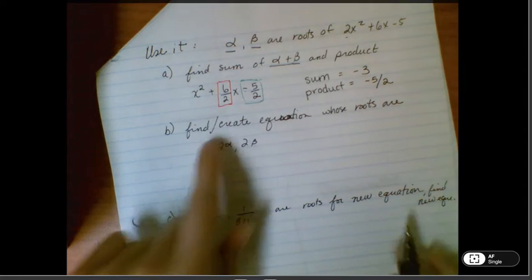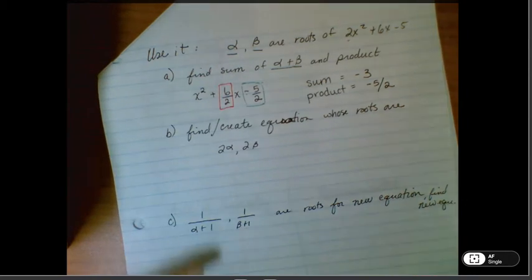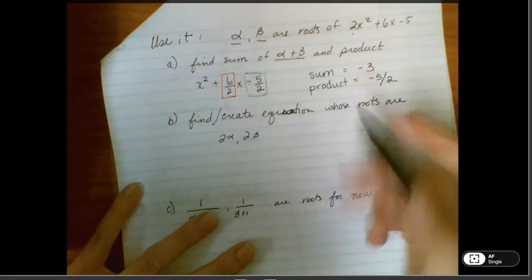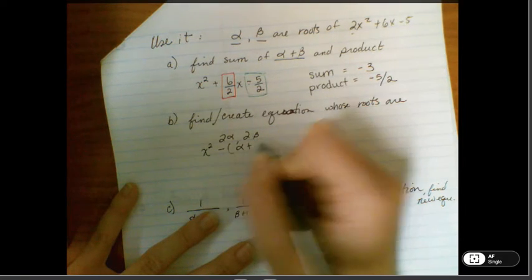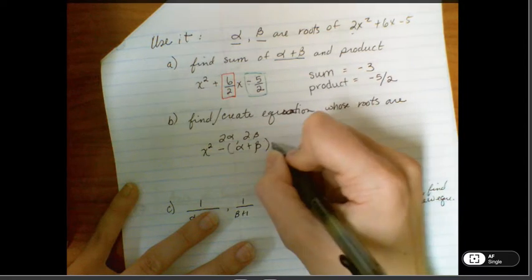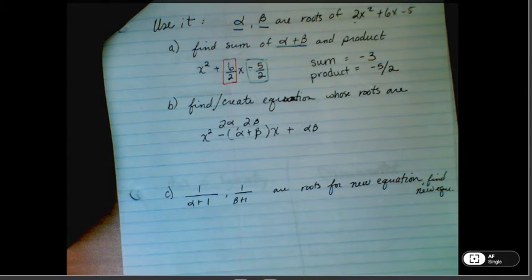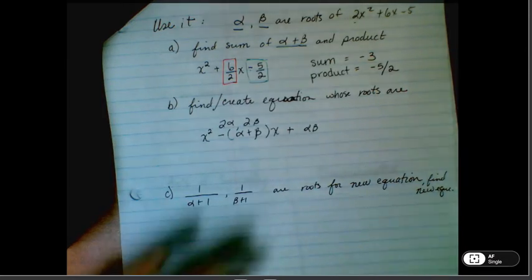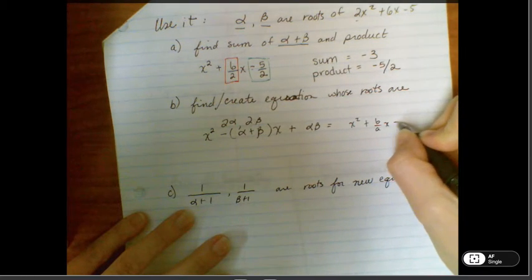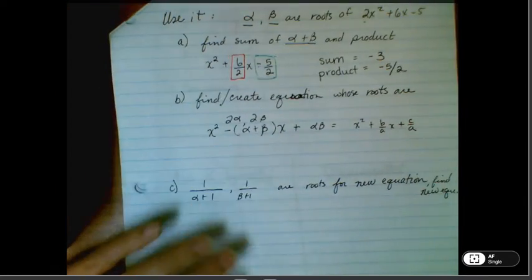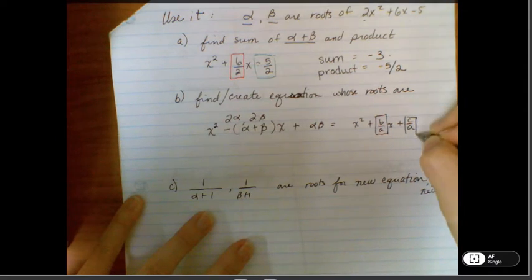So we're going to try to find and create an equation whose roots are double alpha and double beta. So this is what it would look like in that factored-out form where we're using the alpha and the beta. So this is equal to x squared plus b over a x plus c over a, so we know that this term right here is the opposite of our sum, this term right here is our product.